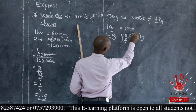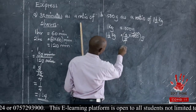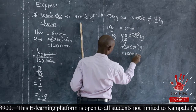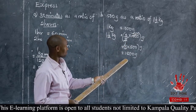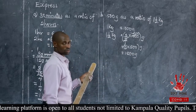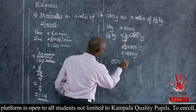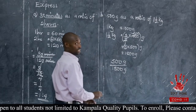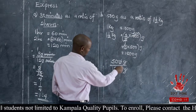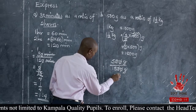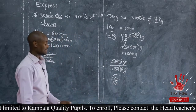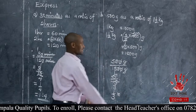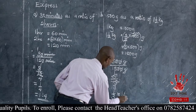Divide 1,000 by 2 gives 500, so we have three times 500 grams, which gives us 1,500 grams. So one and a half kilograms equals 1,500 grams. Now we express 500 grams out of 1,500 grams. Cancel the grams and the zeros: we remain with 5 out of 15. Divide by 5: one third. So expressed as a ratio, it becomes 1 to 3.